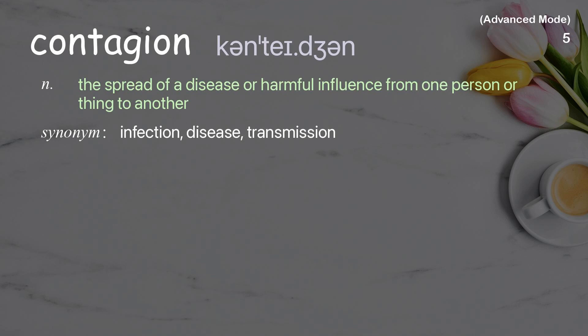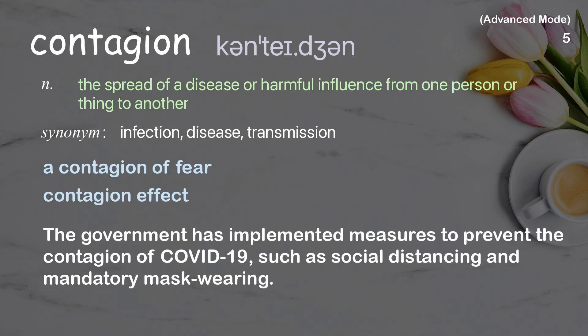Contagion: the spread of a disease or harmful influence from one person or thing to another. Examples: a contagion of fear, contagion effect. The government implemented measures to prevent the contagion of COVID-19, such as social distancing and mandatory mask wearing.